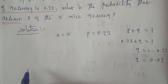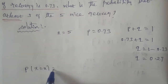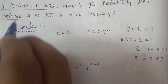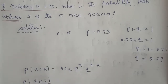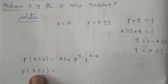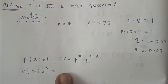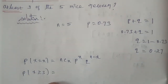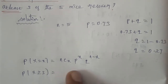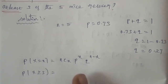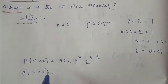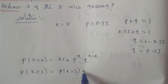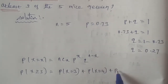The formula is P(X) is equal to nCx multiplied by P to the power x, and Q to the power of n minus x. Since we want at least 3, X takes values 3, 4, and 5. So P(X ≥ 3) is equal to P(X=3) plus P(X=4) plus P(X=5).